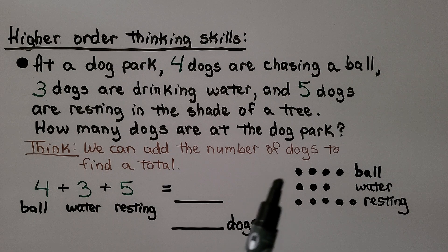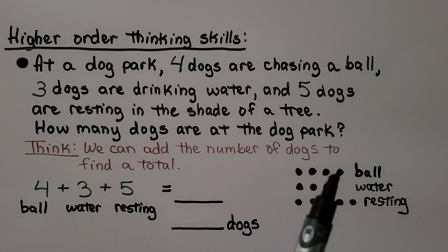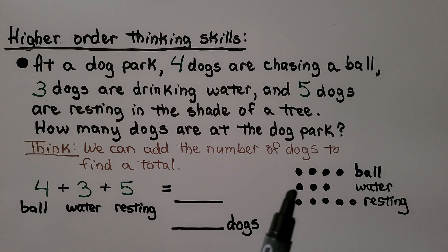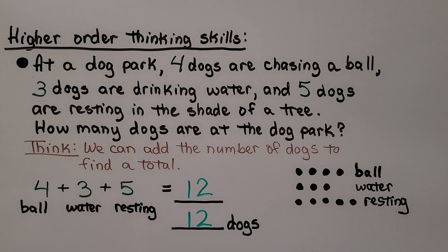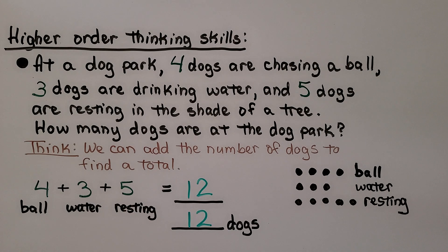We can count them all: four, five, six, seven, eight, nine, ten, eleven, twelve. Four plus three plus five is equal to twelve. That means there are twelve dogs at the dog park.